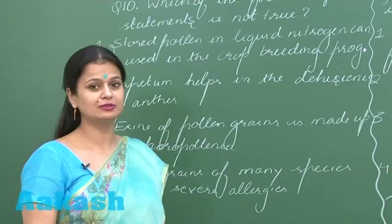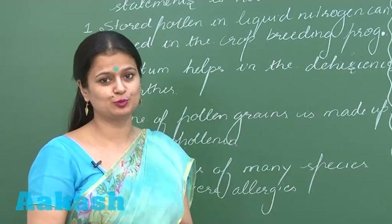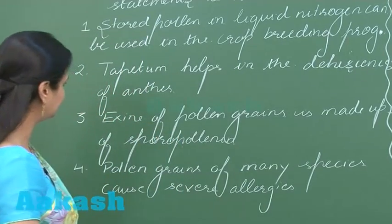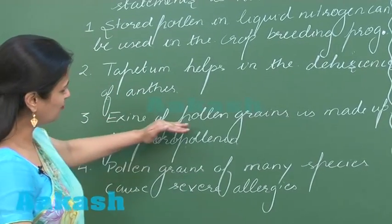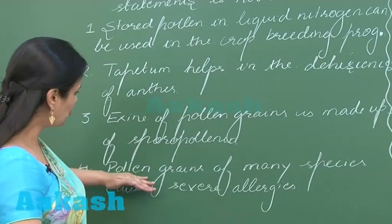That's wrong. Tapetum is involved in nutrition. It is a layer which provides nutrition to the developing pollen grain. The exine of pollen grain is made up of sporopollenin. That's again right.